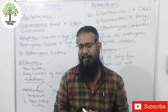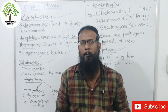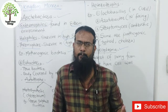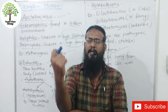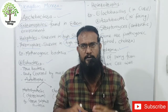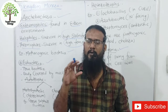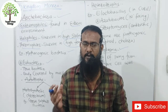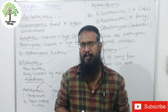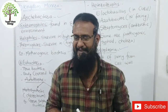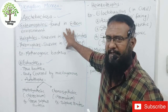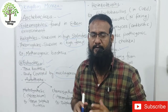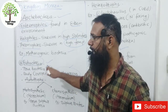Methanogenic bacteria means these bacteria produce methane gas. These bacteria are naturally found in ruminant animals and in the gut. They are used in biogas production. This concludes Archaebacteria. The second type is Eubacteria — the name itself indicates the meaning: it means true bacteria.